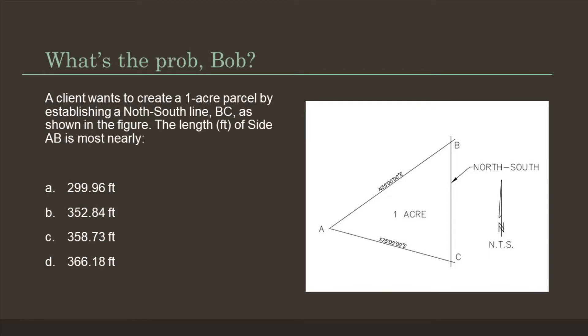So what's the problem? A client wants to create a one-acre parcel by establishing a north-south line BC, as shown. The length of side AB is most nearly: A) 299.96 feet, B) 352.84 feet, C) 358.73 feet, or D) 366.18 feet.